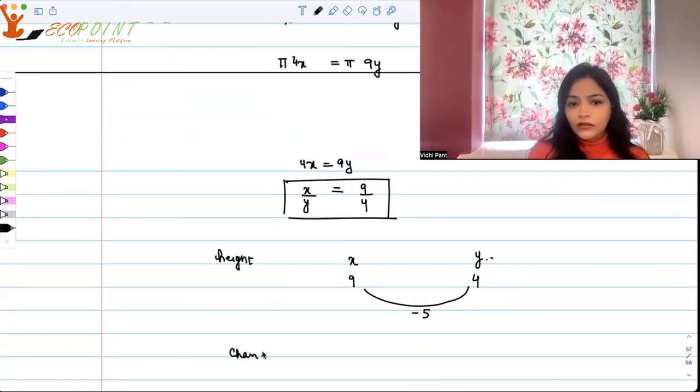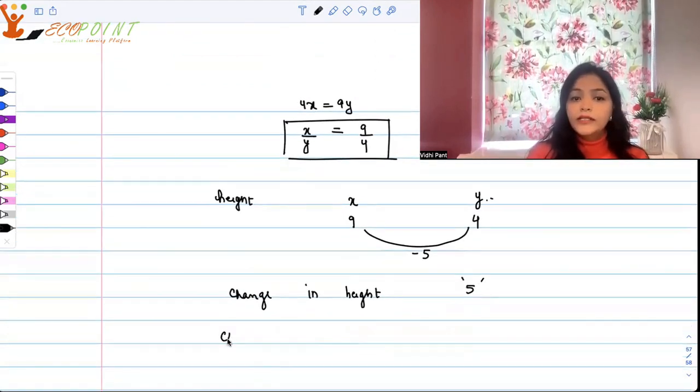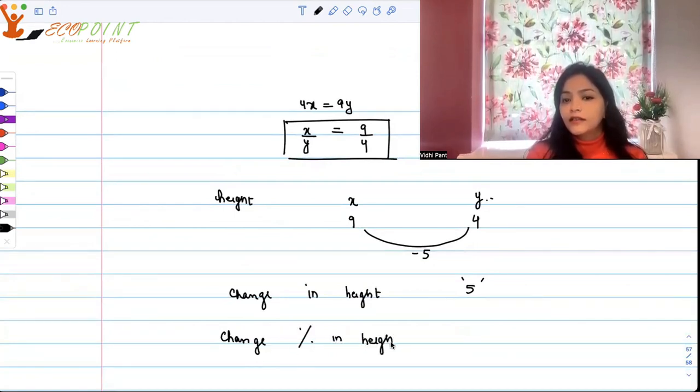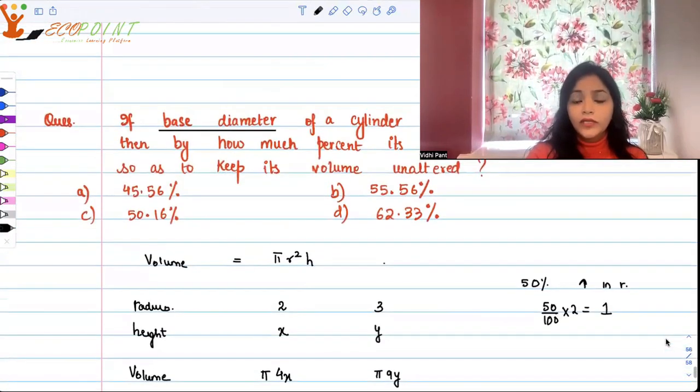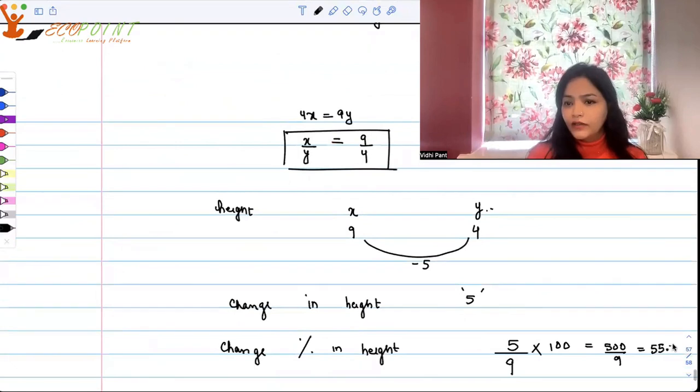What is the percentage change in height? The change is 5, initially it was 9. Change upon initial times 100, so it's 500 upon 9, which means 55 point something. We have that option: 55.56. So the correct answer is B, which is 55.56%.